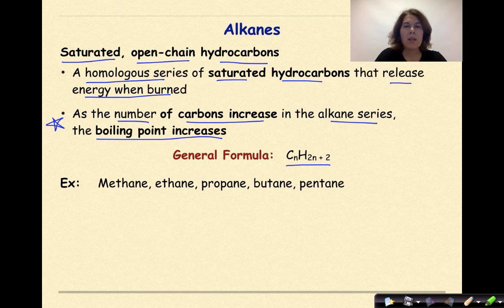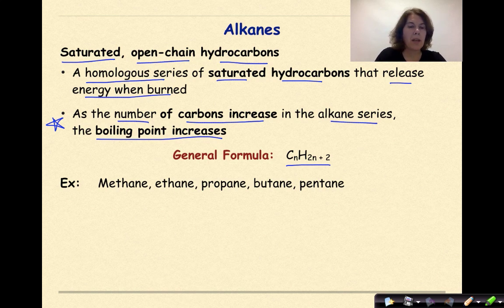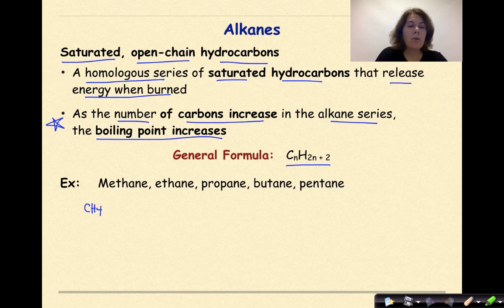We're going to look at methane, ethane, propane, butane, and pentane. The chemical formula for methane is CH4. You've seen this before when we drew non-polar molecules and looked at molecular polarity and bond polarity — carbon has four bonds. It has one carbon, so that's 'meth,' and it is not bound to any other carbons, so it's -ANE. So this is methane.